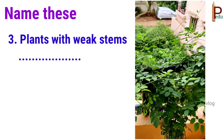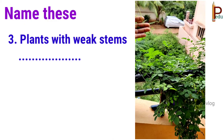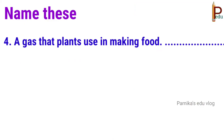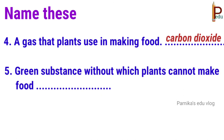Plants with weak stems are called climbers. A gas that plants use in making food is carbon dioxide, which is present in air. The green substance without which plants cannot make food is chlorophyll.